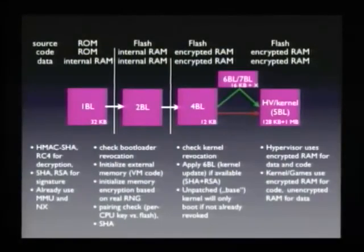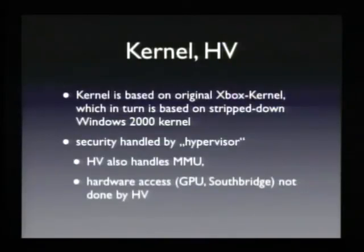The kernel itself includes the hypervisor in the lower 128 kilobytes of RAM. The hypervisor completely uses encrypted RAM for code and data. The kernel and games use encrypted RAM for code so you cannot override it with a DMA attack, but they don't encrypt all data — this allows data to be passed to the GPU without decryption first and makes things easier for game developers. In general, all game data is unencrypted. The kernel and hypervisor are based on the original Xbox kernel, which in turn is based on a stripped-down Windows 2000 kernel — about one megabyte of code.